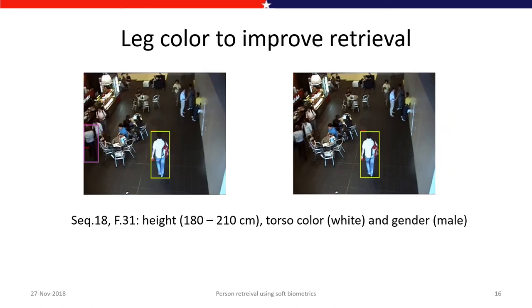As discussed, when two persons share the same height, torso color, and gender, they can be further filtered using a leg color query. When the leg color query was given as blue, only a single person out of the two was successfully retrieved.